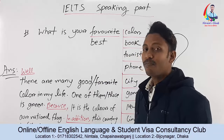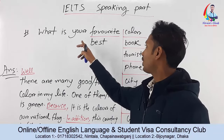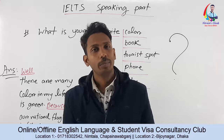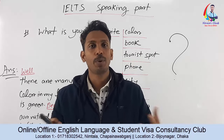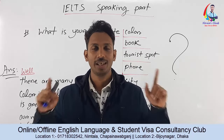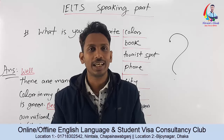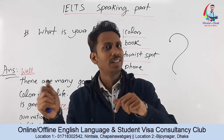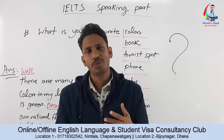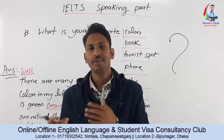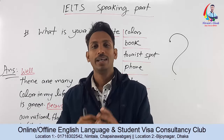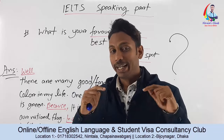If you simply answer 'my favorite color is blue' and stop there, that is a very average-level answer. The maximum score you can get with that kind of response is around 4 or 4.5. To score above that, you need to do more.